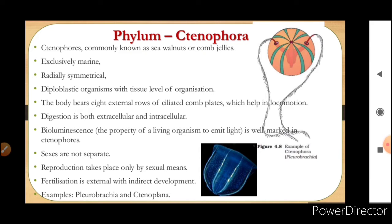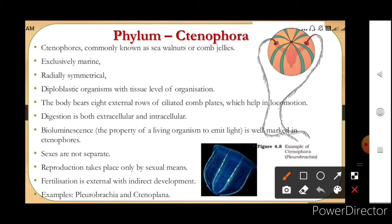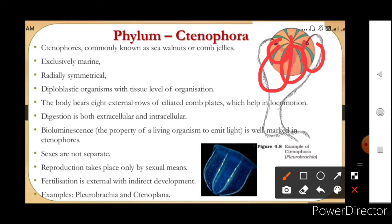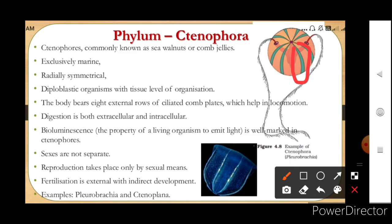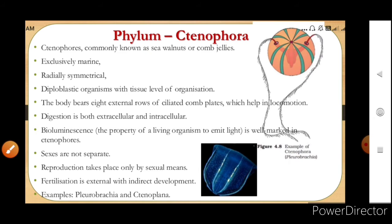Examples of Ctenophora are Pleurobrachia and Ctenoplana. The comb plates have cilia which help in locomotion. You can see in the diagram that the body is divided into many segments — these ciliated comb plates combine and their cilia help the organism in locomotion.